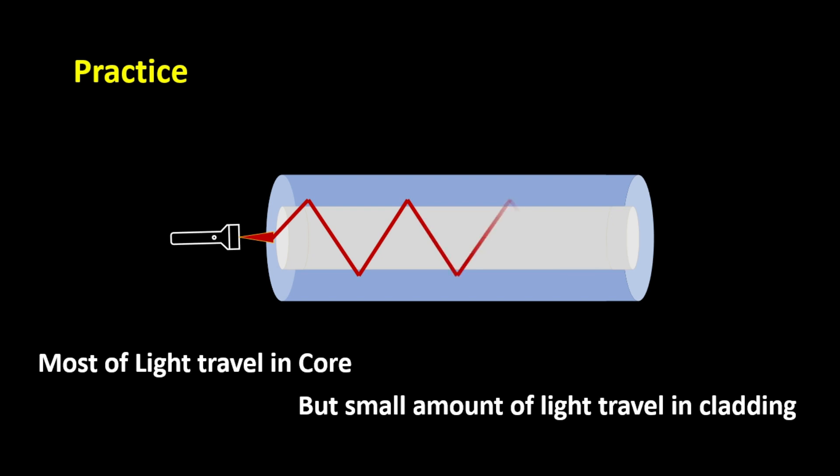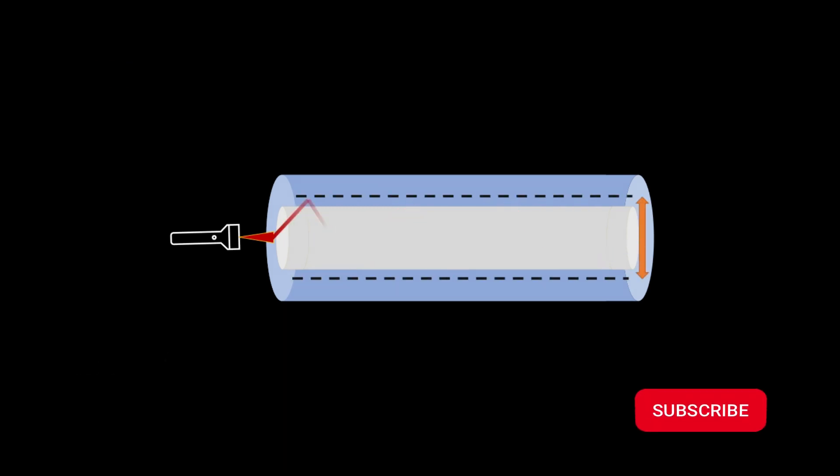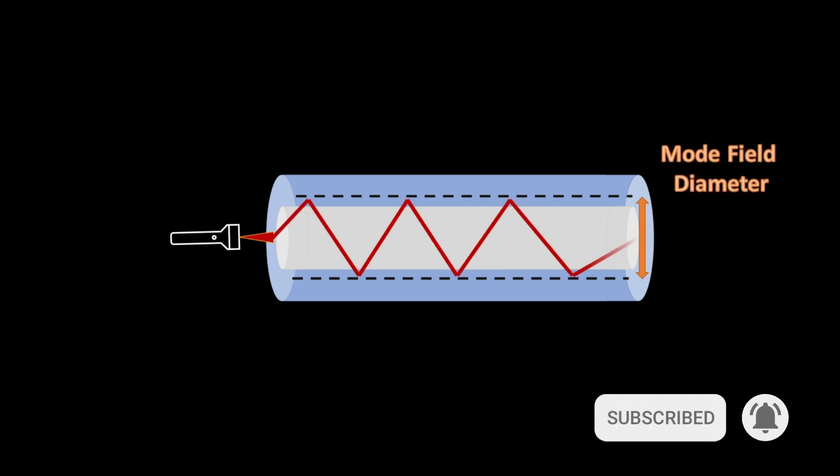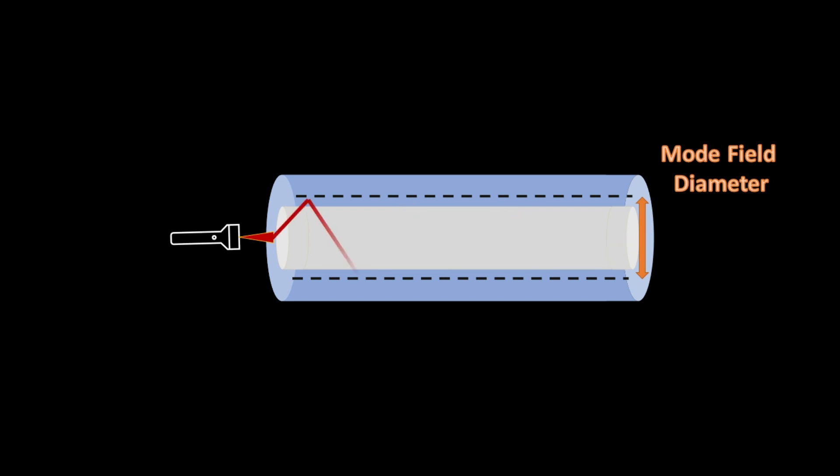That depends on wavelength types - larger wavelengths travel in more cladding area. So this region where most of the signal propagates is called the mode field diameter. It's larger than the core - for example, a core of 8 micrometers can yield 9.5 micrometers MFD.